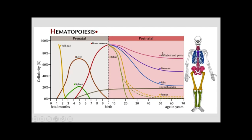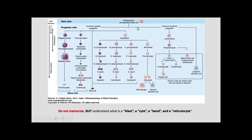With age, only the vertebrae, pelvis, sternum, and ribs continue producing blood cells; the tibia and femur stop or produce very little. If bone marrow fails — due to infiltration, aplastic anemia, or other problems — the liver and spleen reactivate hematopoiesis, which is why you may find splenomegaly and hepatomegaly in those conditions, as these organs are now making blood cells in addition to their normal functions.